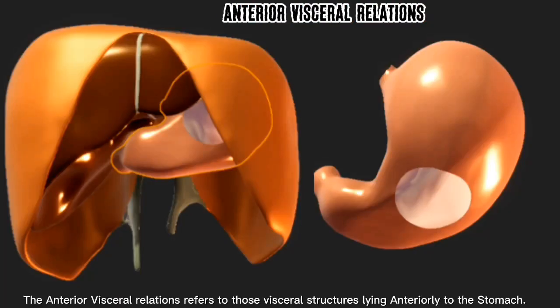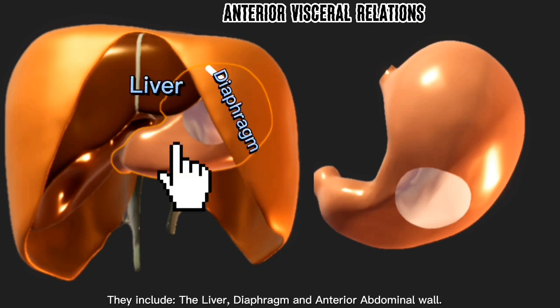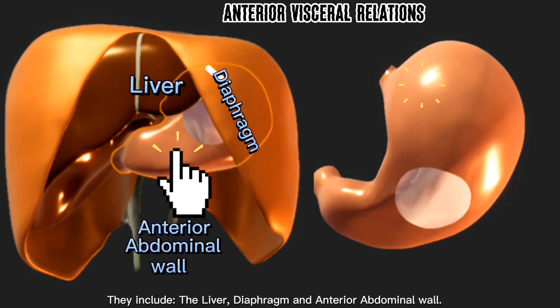The anterior visceral relations refers to those visceral structures lying anteriorly to the stomach. They include the liver, diaphragm, and anterior abdominal wall.